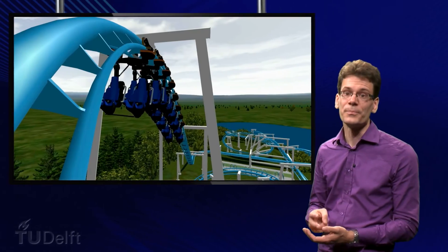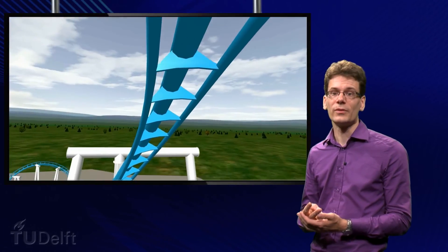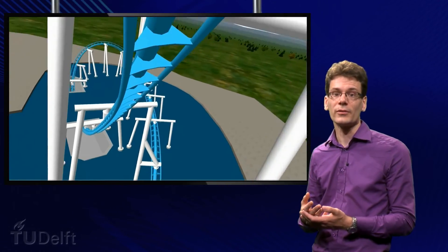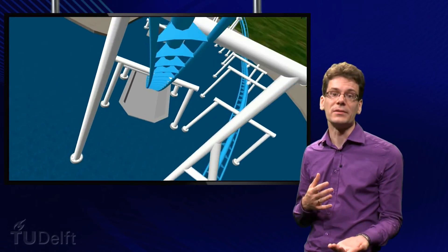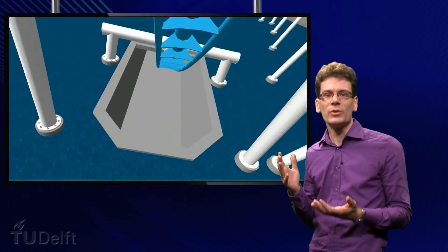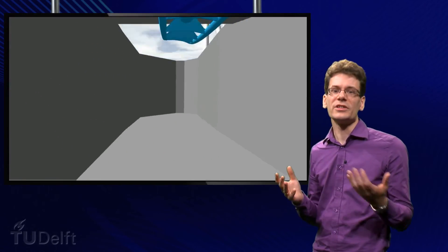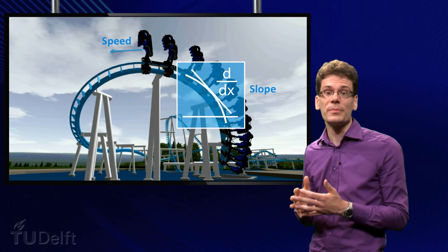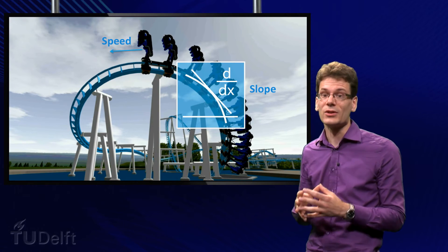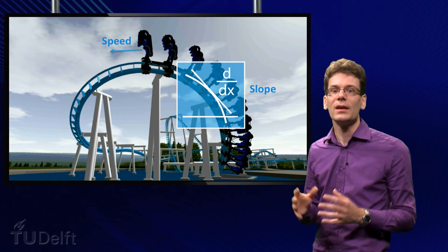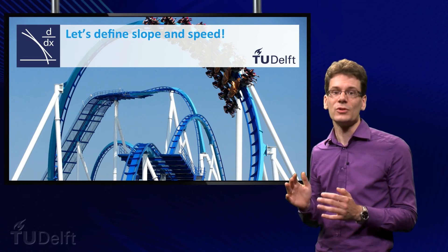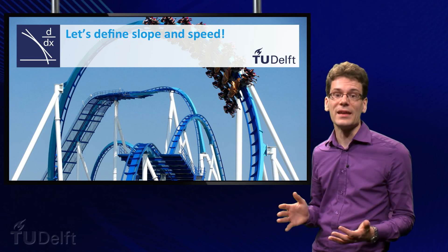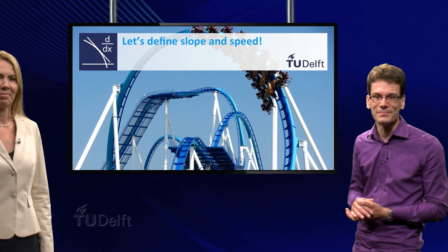So, two of the most important ingredients for building a great roller coaster ride are slope and speed. But what is slope and what is speed exactly? Even to define slope and speed, we need the concept of differentiation. This week, you will learn about differentiation and its many applications. Enjoy the ride!